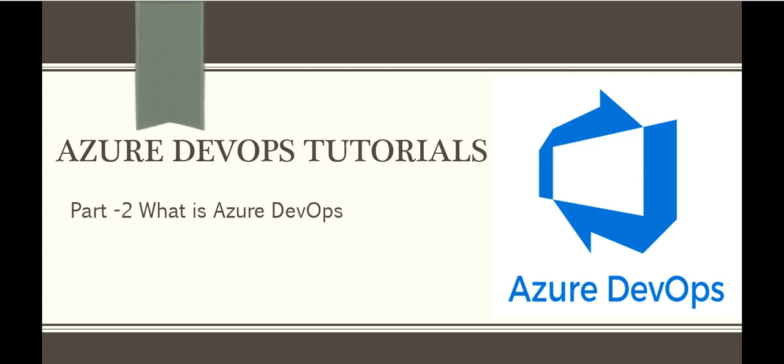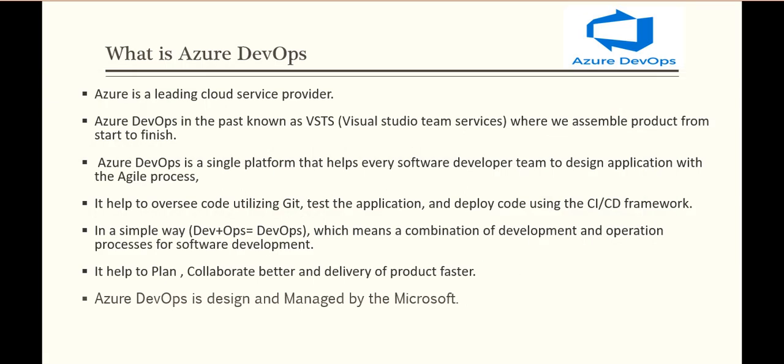Azure DevOps helps us to plan a product very smoothly and accurately — like when we have to deliver. It provides tools for every step: planning, testing, and deployment. For every stage in the lifecycle, Azure DevOps provides a dedicated tool to take care of that step. Apart from this, Azure DevOps enables team collaboration and faster product delivery.